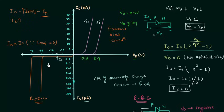If you go on increasing the reverse bias potential to a higher value, you will find a sudden rise in current. This graph is for germanium and this one is for silicon, and both show a sudden rise in current at a certain voltage. This voltage is known as the breakdown voltage.